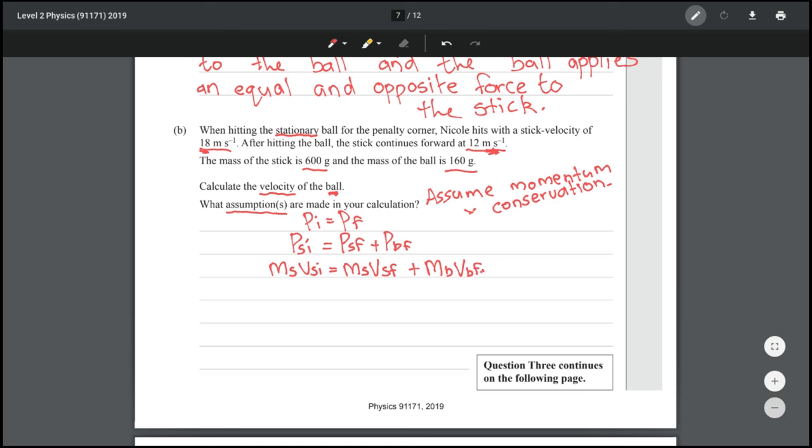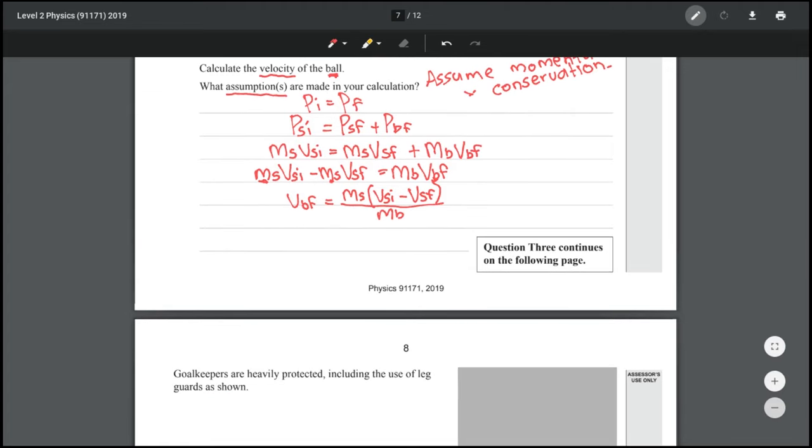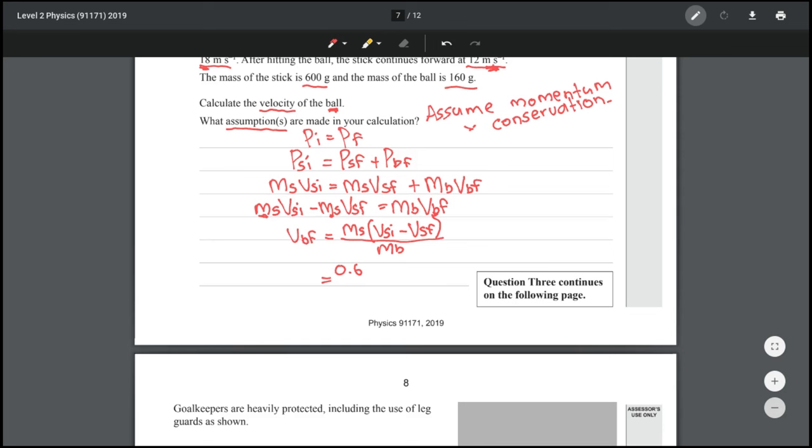And now solving for VBF which is what we're of course trying to find. To do that I'm going to subtract MSVSF from both sides. And now I'm going to do three things. I'm going to factorize MS out so I only have to write it once rather than twice. I'm going to swap the sides around so that I end up with VBF on this side and I'm also going to divide by mass, try to keep up. Now I just need to put the numbers in where you must remember to write the masses in the kilogram equivalence, which gives me 22.5. And since the question gives me two significant figures I'm going to round that to 23 meters per second.